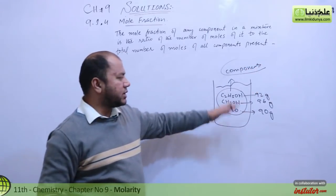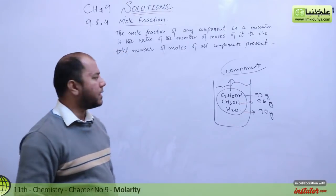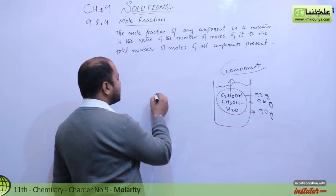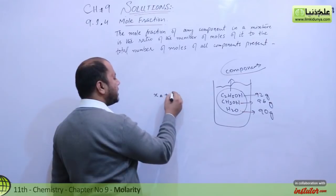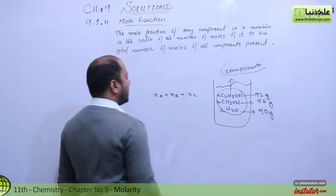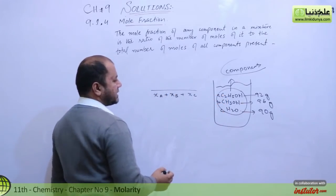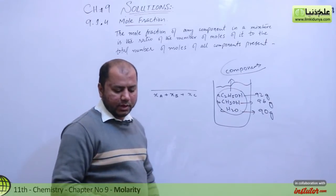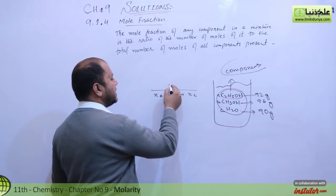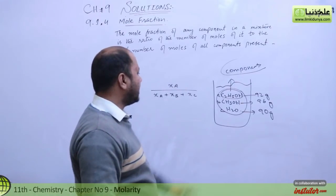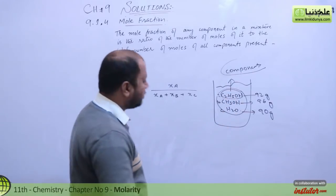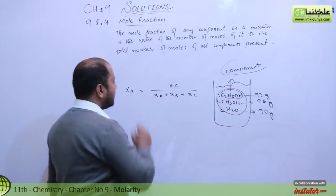Now, what I want to tell you about mole fraction: we have three components — Xa, Xb, and Xc. Let's name them A, B, and C. You just need to know about one at a time. Let's say you want to know about ethyl alcohol, so Xa is on top and the total is on the bottom. So Xa equals moles of A divided by total moles.